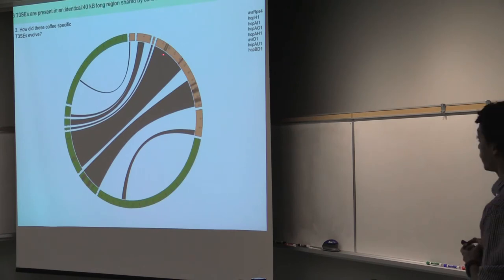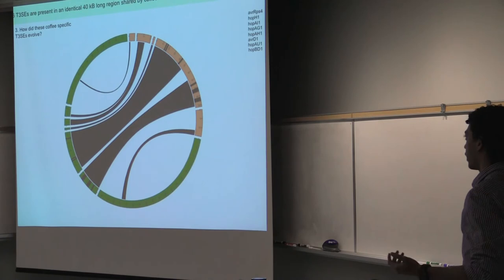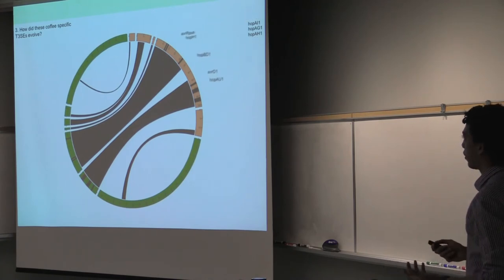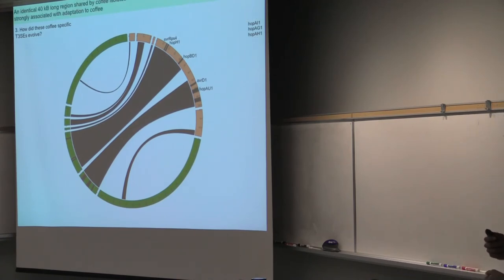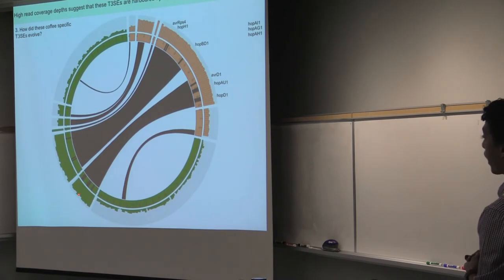When we map our type 3 effectors into this region, and we take all of these contigs, we see that we have six effectors that are present on that particular region. And then interestingly enough for us, five out of six of these effectors are the ones that we identified before as being strongly associated with coffee plants. And the only exception is the last effector called HopI1. And in addition, when we look at the coverage depths of each one of these contigs, we see that these contigs that have the effectors seem to have very high coverages in comparison to the other contigs that are expected to be from the chromosome. So we think that these contigs are actually part of a plasmid.